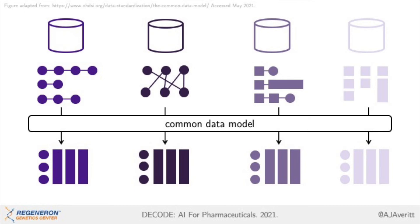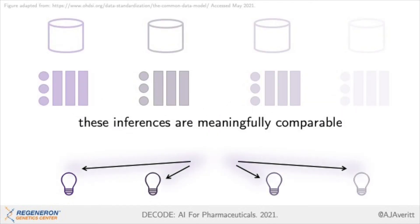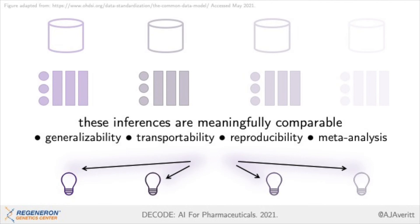So, if we take many data sources and apply a CDM to them, we get a set of standardized data sources. These can then go through an algorithm to produce inferences. Because the input looks the same, the inferences are meaningfully comparable. And this can support the variety of tasks we discussed before, including generalizability, transportability, reproducibility, and meta-analyses — which, in total, provide reliable evidence.